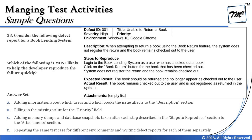Question 38: consider this defect report for a book lending system. It has a defect ID, title — 'Unable to return a book', severity is filled, priority is empty, environment is Windows 10 and Google Chrome. The description says when attempting to return a book using the book return feature, the system does not register the return and the book remains checked out. Steps to reproduce: login as a user who has a checked-out book, click the book return button, system does not register the return. Expected result: book should be returned and no longer appear checked out. Actual result: book remains checked out. Attachments are empty.